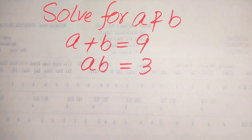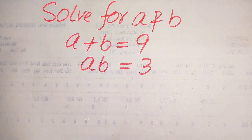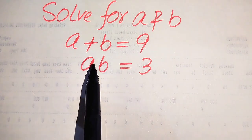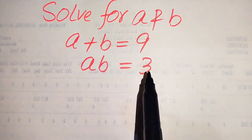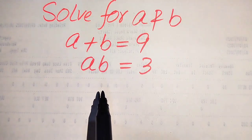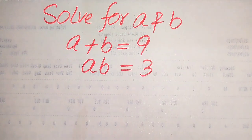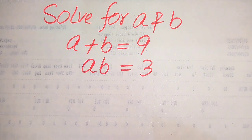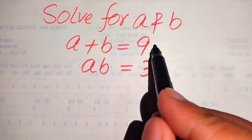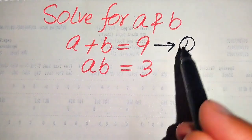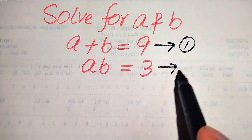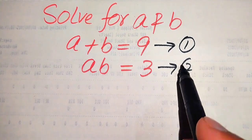Hello everyone. How to solve this problem for the values of a and b, if we have a plus b equals to 9 and ab equals to 3, and we solve this problem for all the values of a and b. Here we call this equation number 1 and this equation number 2.